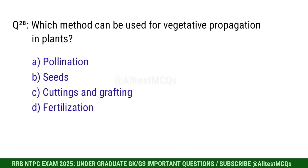Q28. Which method can be used for vegetative propagation in plants? Right option is C. Cuttings and grafting.